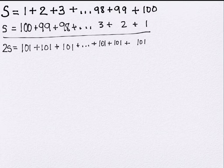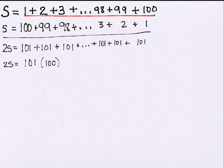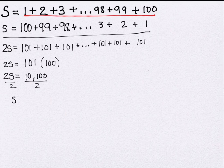How many 101s do we have? 100 — because there are 100 numbers in our original sequence. We'll talk next time about what happens when you don't start with 1 or skip numbers along the way. So 2S equals 101 times 100, which is 10,100. To find S, we divide by 2, giving us a sum of 5,050.